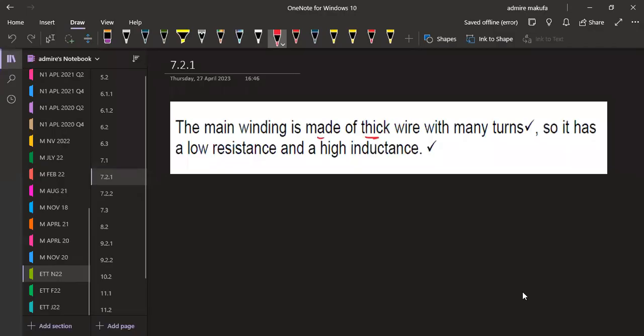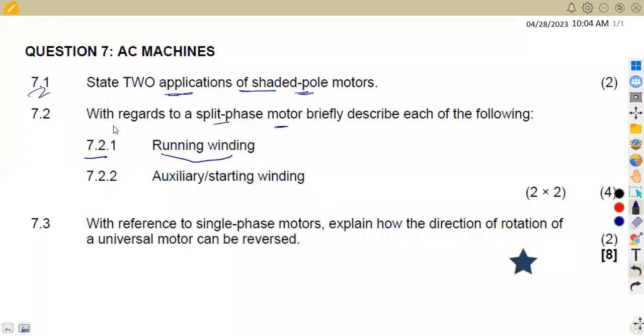...is made of thick wire with many turns. It has low resistance and high inductance. Take note: resistance is low, inductance is high for the running winding.